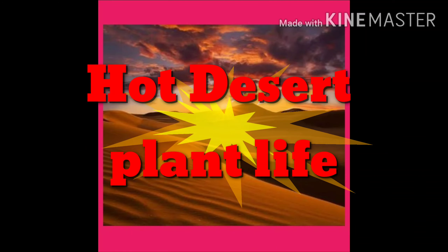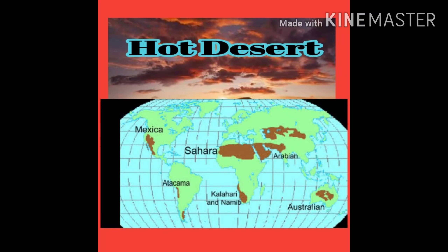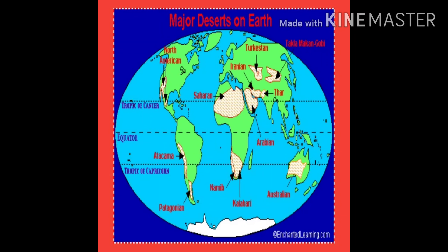As we know, the Sahara and Kalahari deserts in Africa, the Arabian desert in Saudi Arabia, the Great Australian desert in Australia, and the Thar desert in India and Pakistan are some hot deserts of the world. Look at the screen.